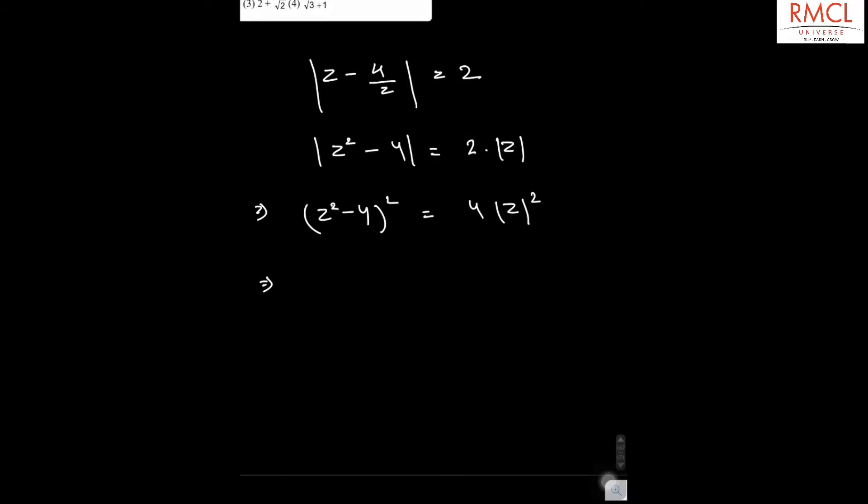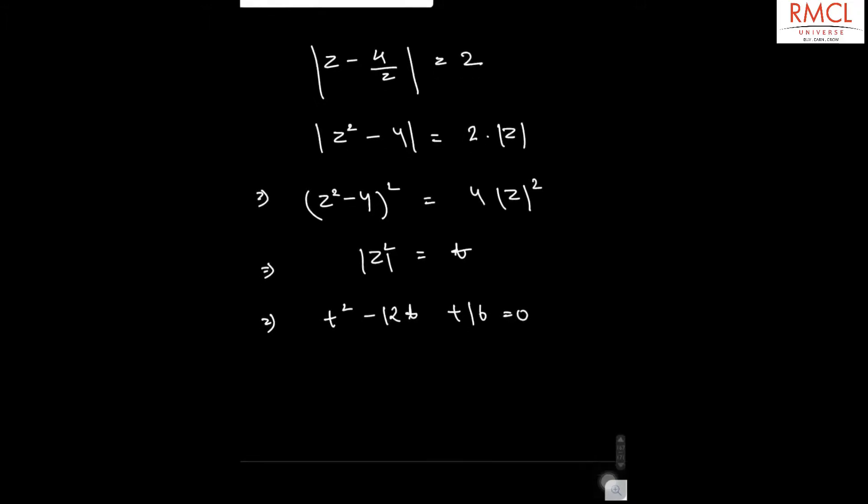So, if you put mod z square equal to t, then you will have the equation t square minus 12t plus 16 is equal to 0.